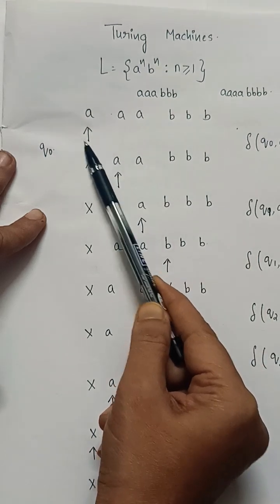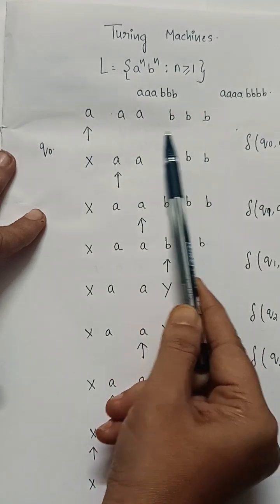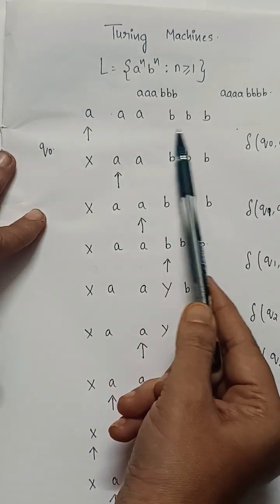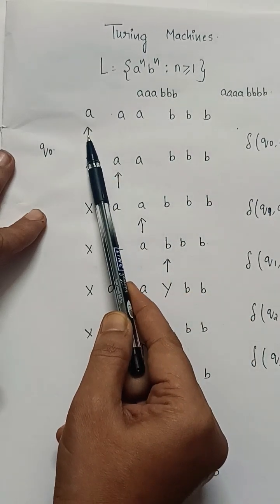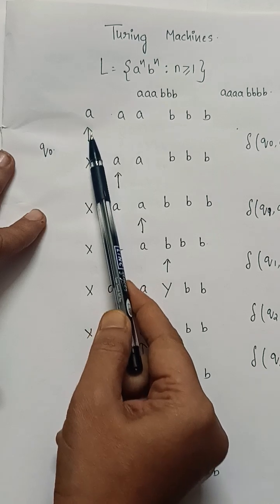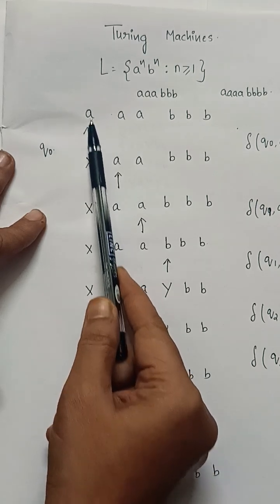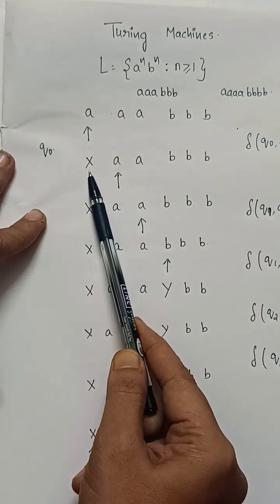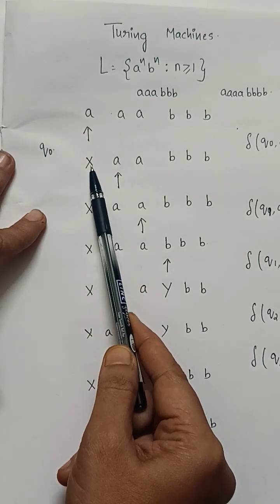So, we have a read write header. This header will be moving from left to right to read equal number of a's to the equal number of b's. So, right now we are at the first symbol that is a. So, one a has been read. To tell that it has been read, a will be replaced with x.